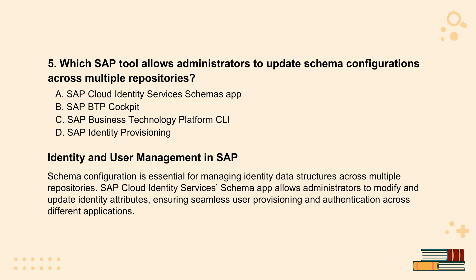Question five gets a little more technical. It asks: which SAP tool allows administrators to update schema configurations across multiple repositories? Think of a schema like a blueprint — it's a blueprint for how you organize user data, defining things like what info you collect about each user, how it's formatted, and what rules govern it. Repositories are basically the databases where all that user info actually lives. The answer is A, the SAP Cloud Identity Services Schema App. It gives admins the power to define custom user attributes, control data structures, and make sure everything stays in sync even in complex environments with data scattered everywhere.